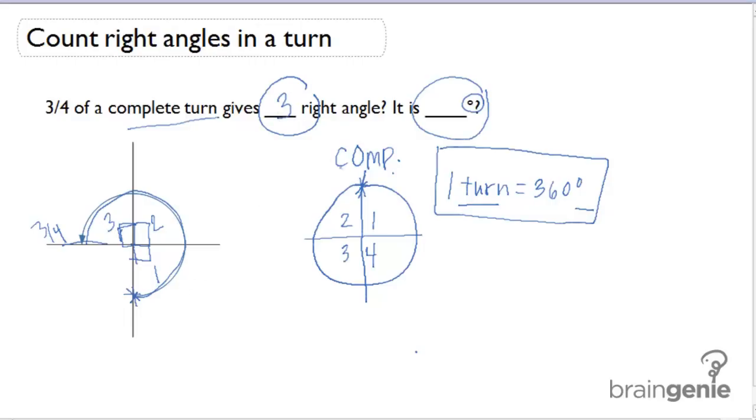Three right angles is equivalent to 270 degrees, because three times 90 degrees equals 270 degrees. Therefore, three-fourths of a turn equals 270 degrees.